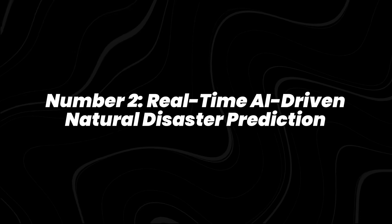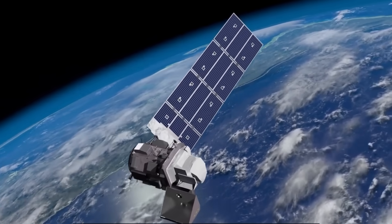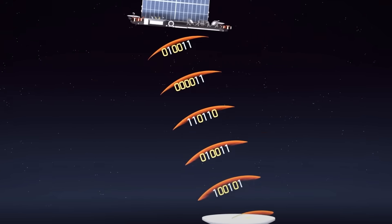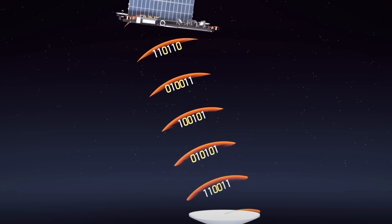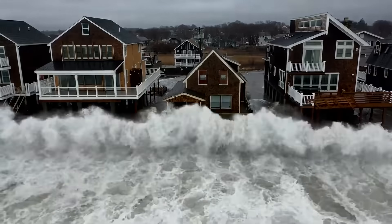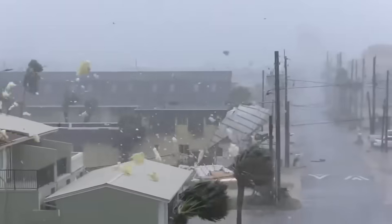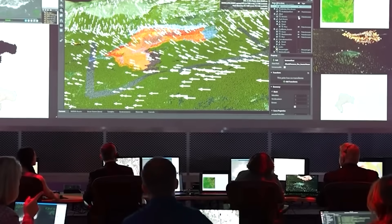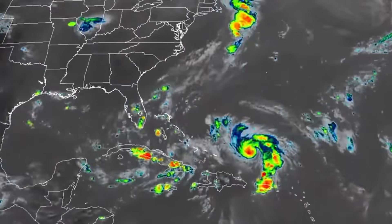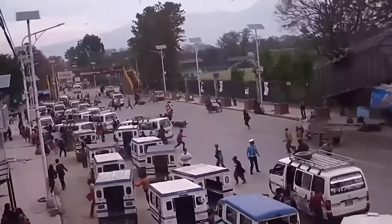Number 2, real-time AI-driven natural disaster prediction. AI-powered systems are now combining satellite imagery, remote sensing, and weather data to predict natural disasters earlier and more accurately. Platforms like Google's flood hub and IBM's AI weather models can forecast floods, storms, and heat waves days to weeks in advance. Newer global projects aim to integrate seismic data for earthquake and tsunami prediction.